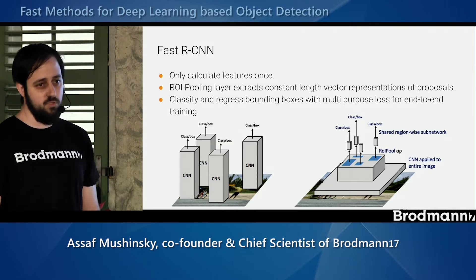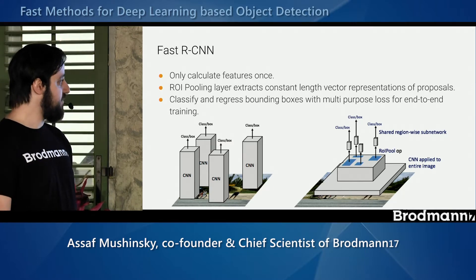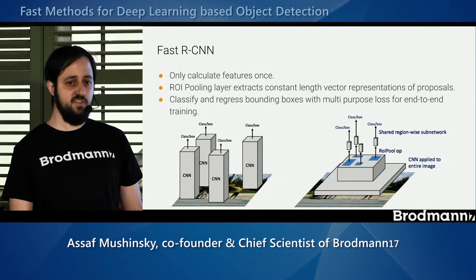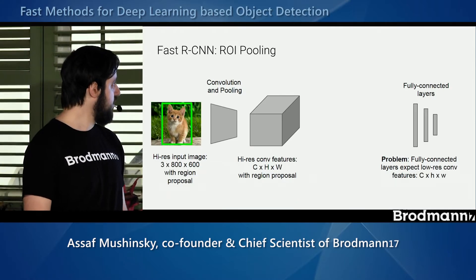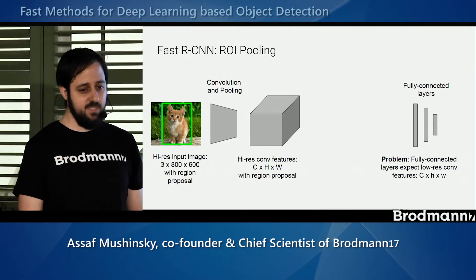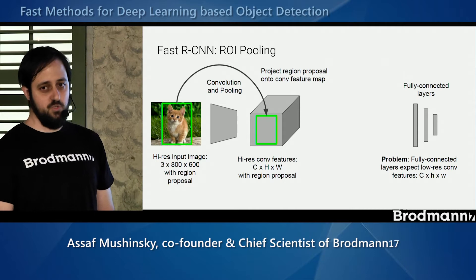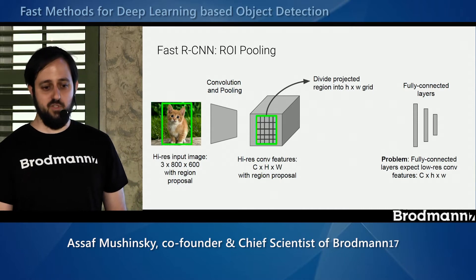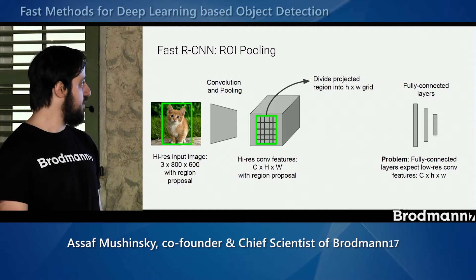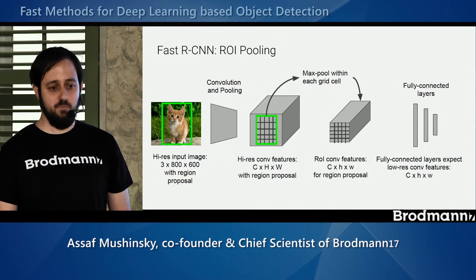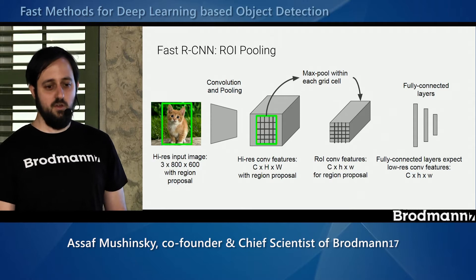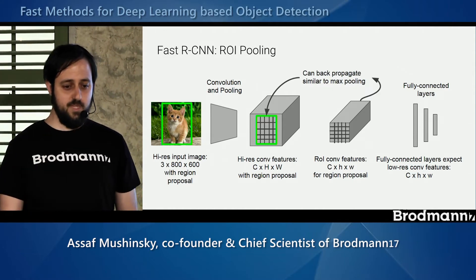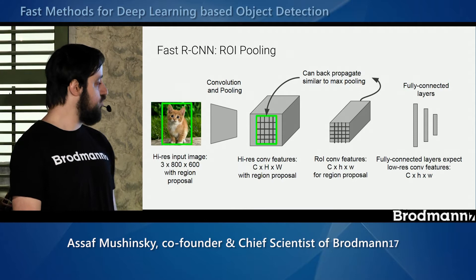Here you can see the comparison between Fast RCNN and RCNN. The key difference is that we sample the features and not the image, which allows us to compute the features only once for the entire image. For ROI pooling: given an image, we have the region of interest which we map to the feature map, then divide this region into a grid of points over which we compute a max pooling operation, giving us a predefined feature map. We then apply fully connected layers and classification, back-propagating through the entire network the same way as regular max pooling.